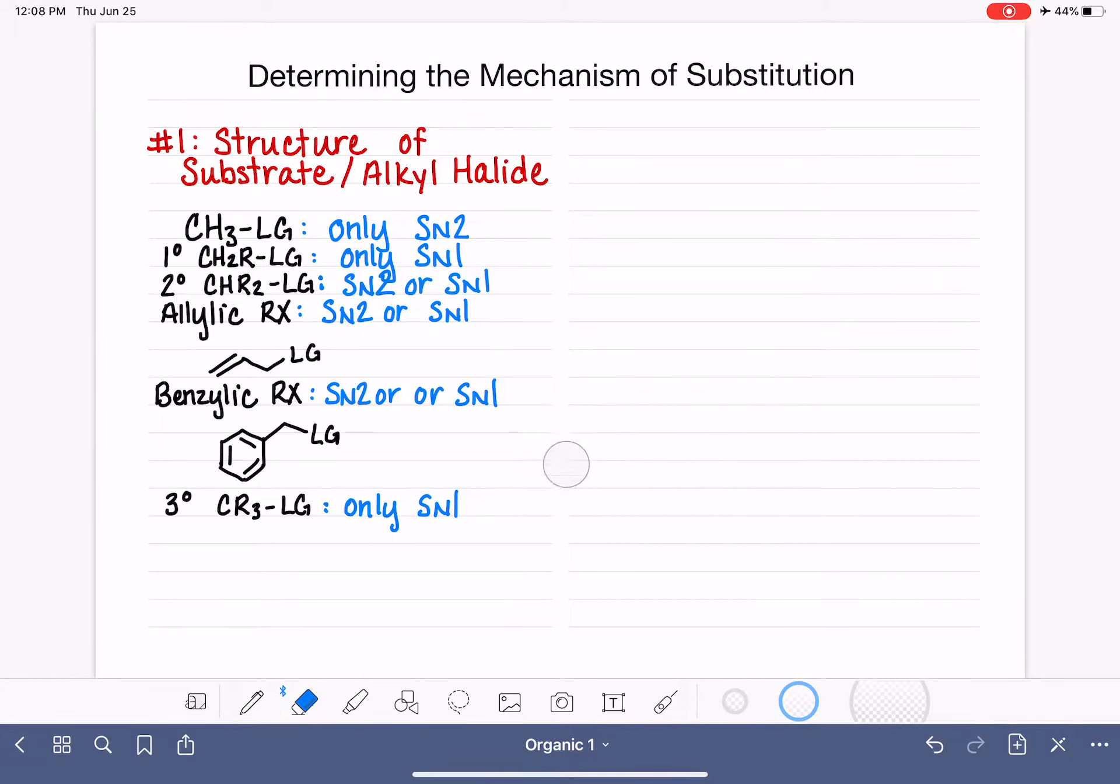So in summary, when we're trying to determine SN1 versus SN2, when we look at the structure of the substrate, if it is methyl or primary or tertiary, we immediately know which mechanism it will take. And we don't have to consider any other variable. If it's secondary or allylic or benzylic, these are capable of doing either SN1 or SN2. And in these cases, we have to move on to another factor to try to predict if it's SN1 or SN2.